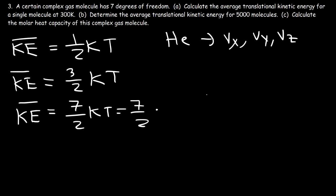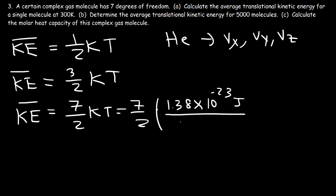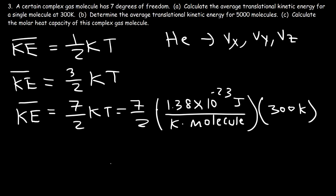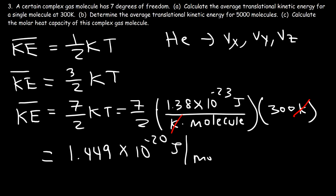So it's (7/2) multiplied by Boltzmann's constant, 1.38×10⁻²³ J/(K·molecule), times the absolute temperature of 300 K. This works out to 1.449×10⁻²⁰ joules per single molecule. That's the answer for part A — one molecule has an average translational kinetic energy of 1.449×10⁻²⁰ J.